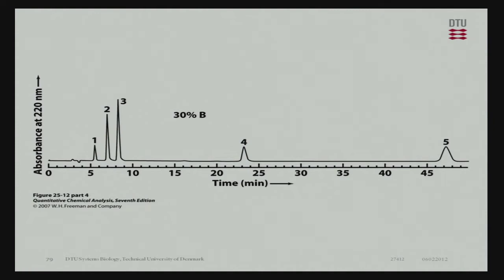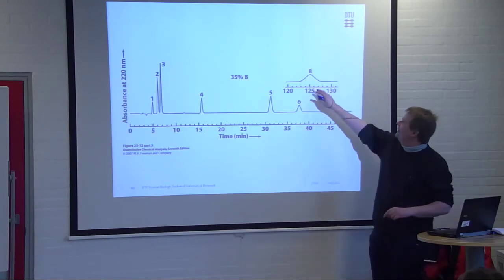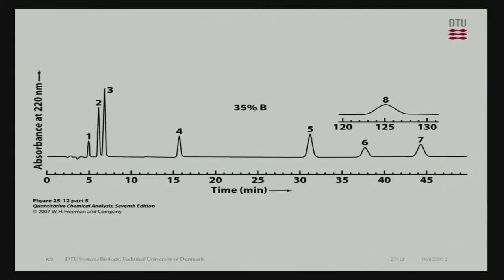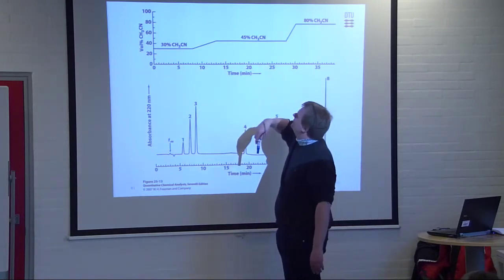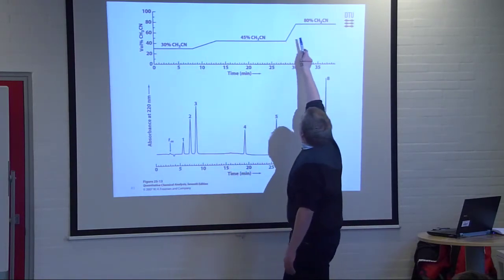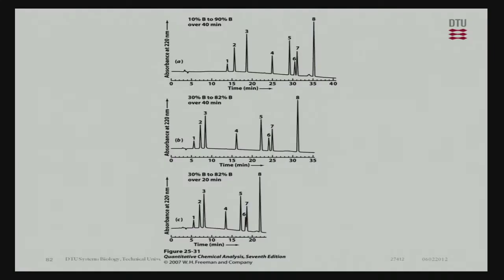Going further, so now we are down at 30% organic. And now I don't even think we get six, seven, and eight out of the system. They stay there until somebody takes up to high organic, and then they're flushed out. They come out. We go a little bit up, and now it's more than two hours to get the last one out. Then, of course, you can say, why don't we take some steps? 30, 45, and so on. And then we can get them all out. Now we are more happy.